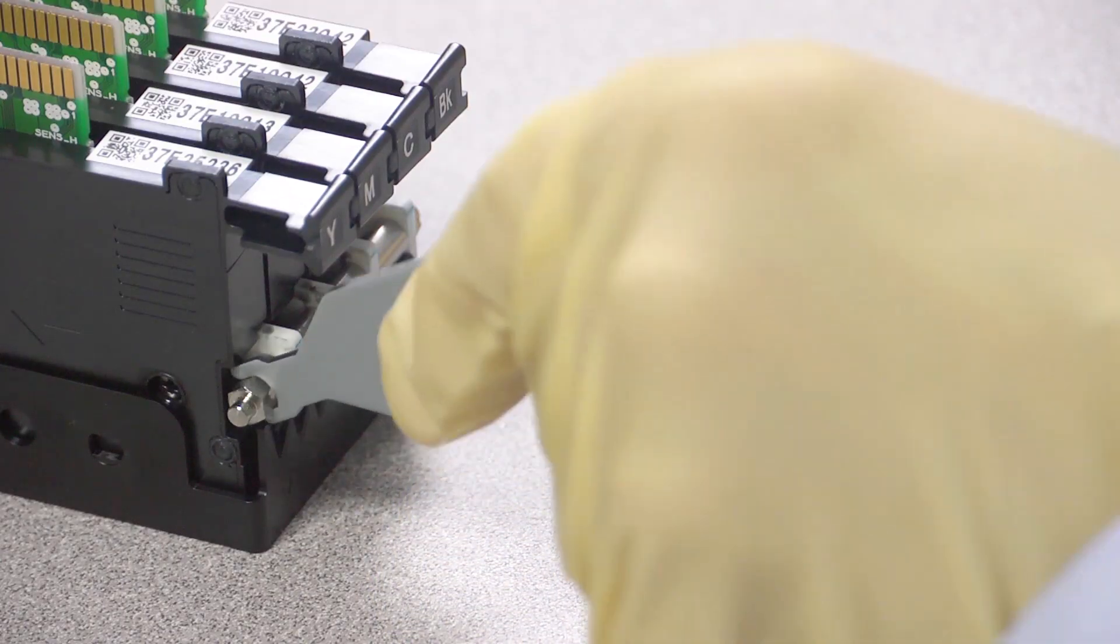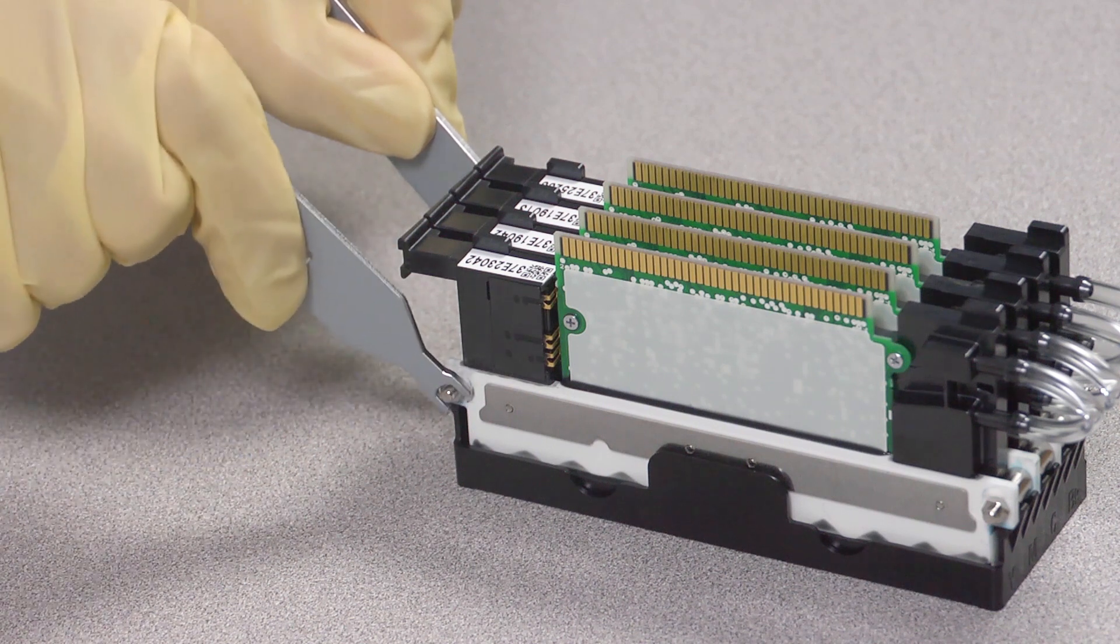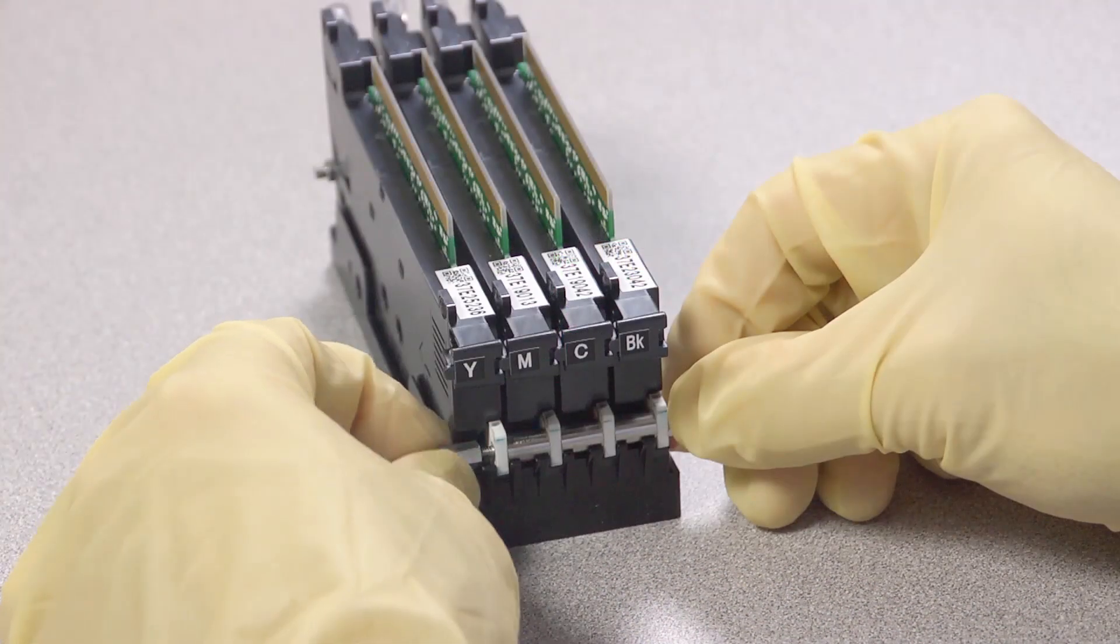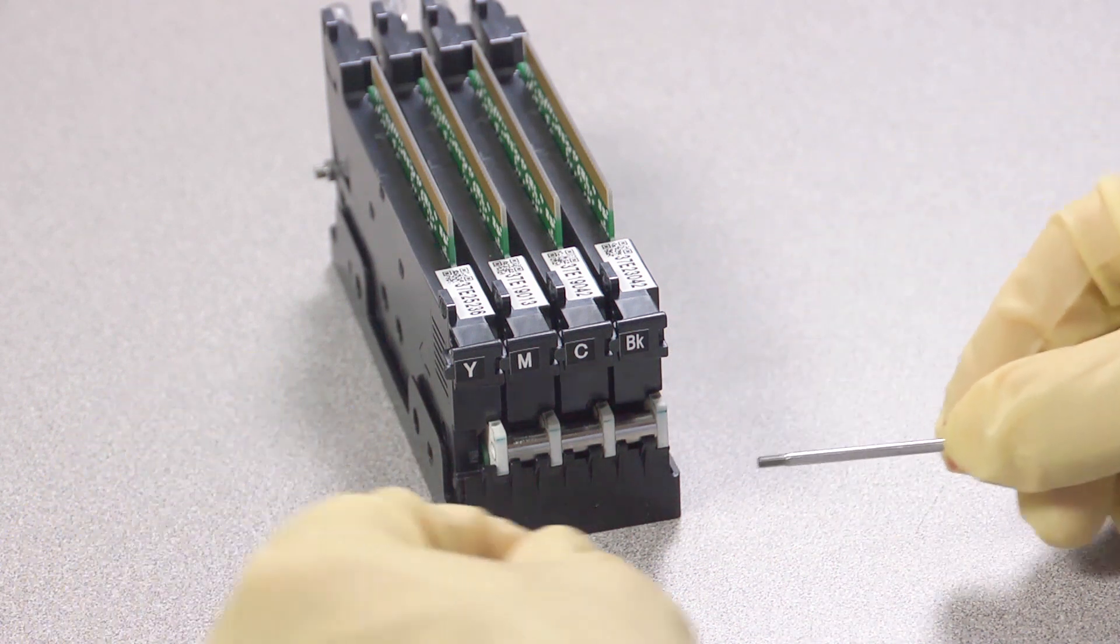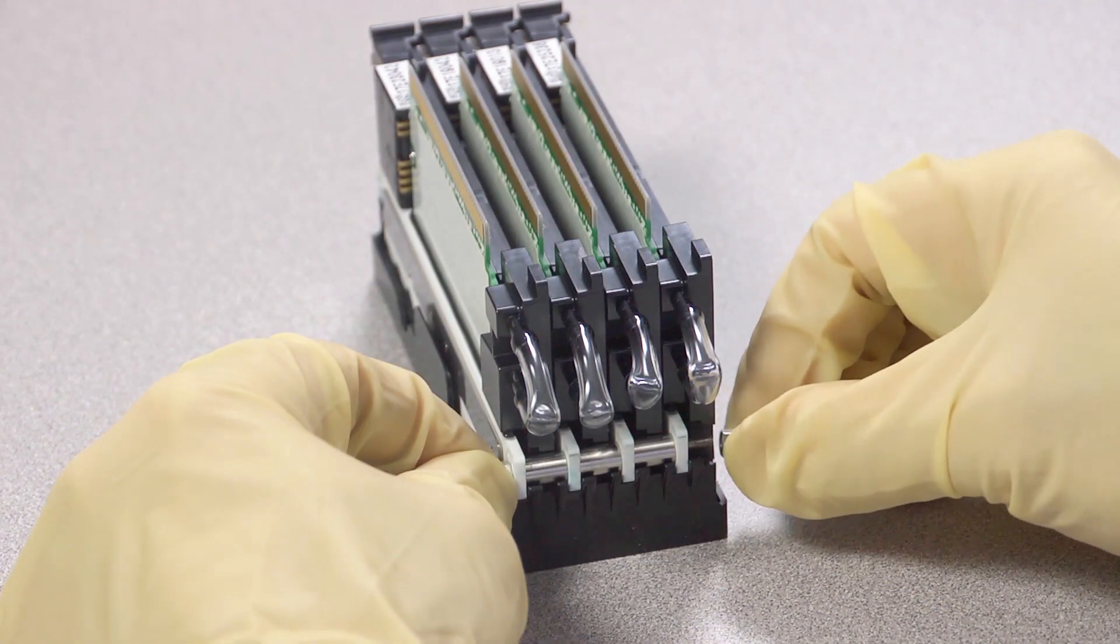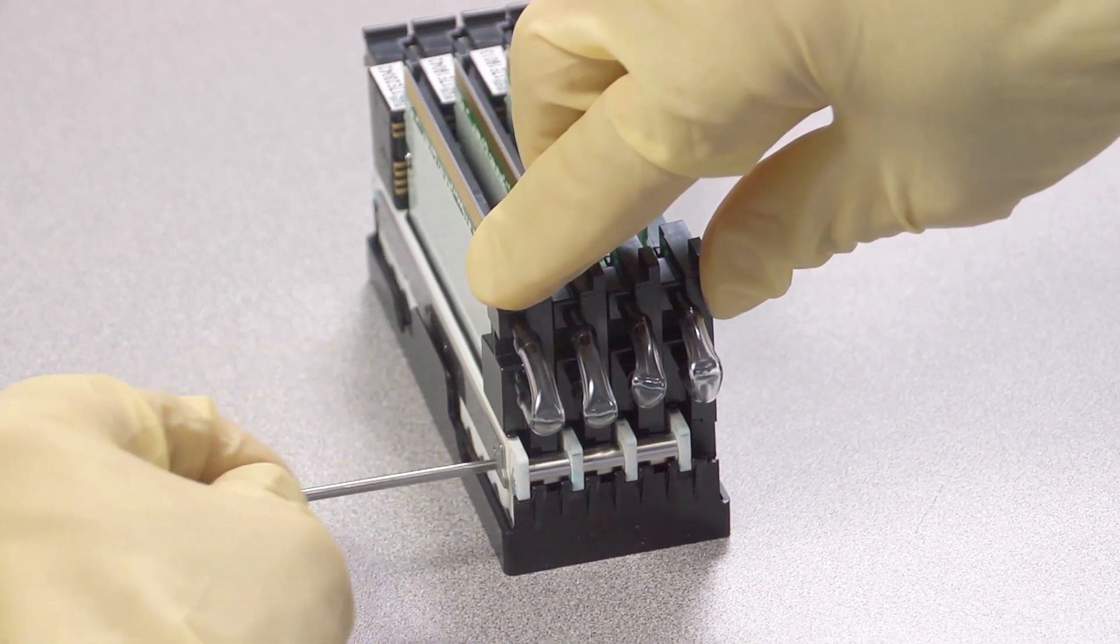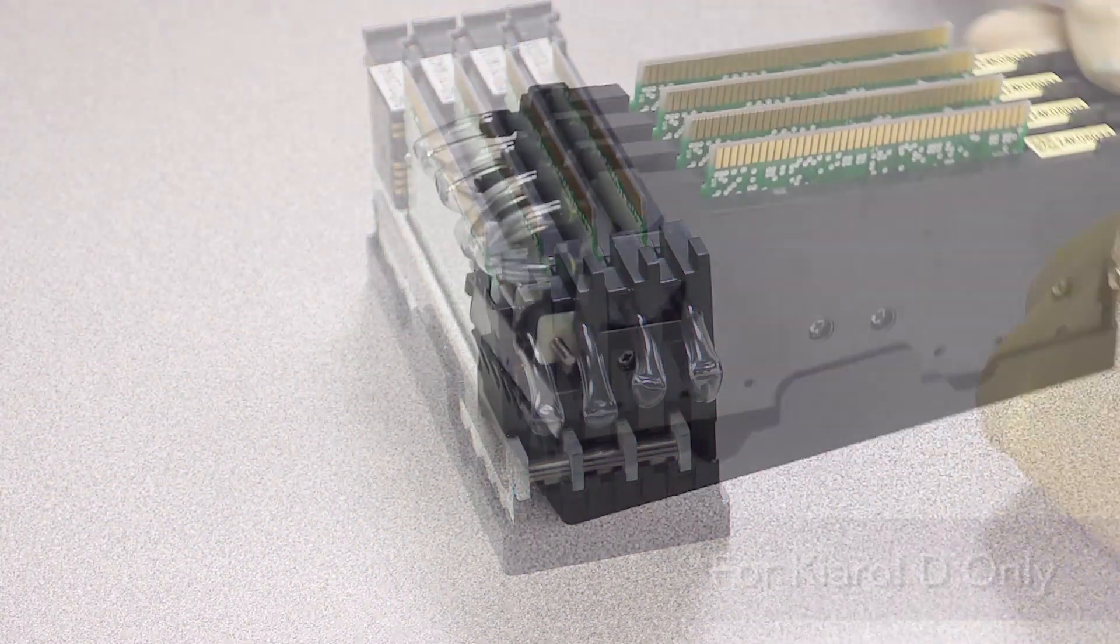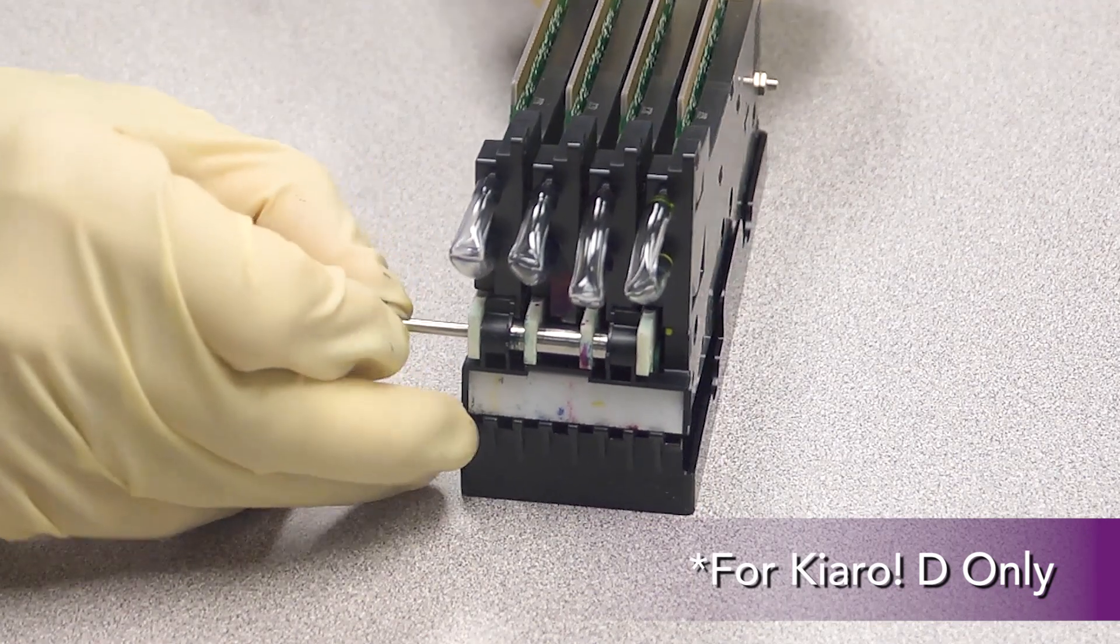Using the small wrenches, disassemble the print head. Once loose, remove the screw and spacer from the print head. Repeat the disassembly on the other side. Now remove the screw and spacer. Kiaro D print heads will have a scraper attached, which can be removed along with the spacers.